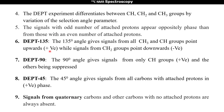To recap: in DEPT 135, CH3 and CH signals point upward (positive phase) and CH2 points downward (negative phase). In DEPT 90, only CH groups are seen and others are suppressed. In DEPT 45, all carbons with attached protons appear in positive phase, except quaternary carbons and other carbons with no attached protons, which are absent in all DEPT experiments.